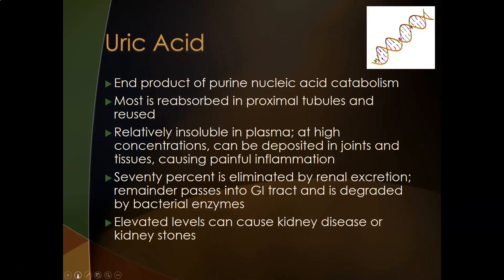The first one is uric acid. Uric acid is the end product of purine nucleic acid catabolism. Your purine nucleic acids are adenine and guanine — the A's and G's of your DNA — and most of uric acid is going to be resorbed in the proximal tubules and reused.